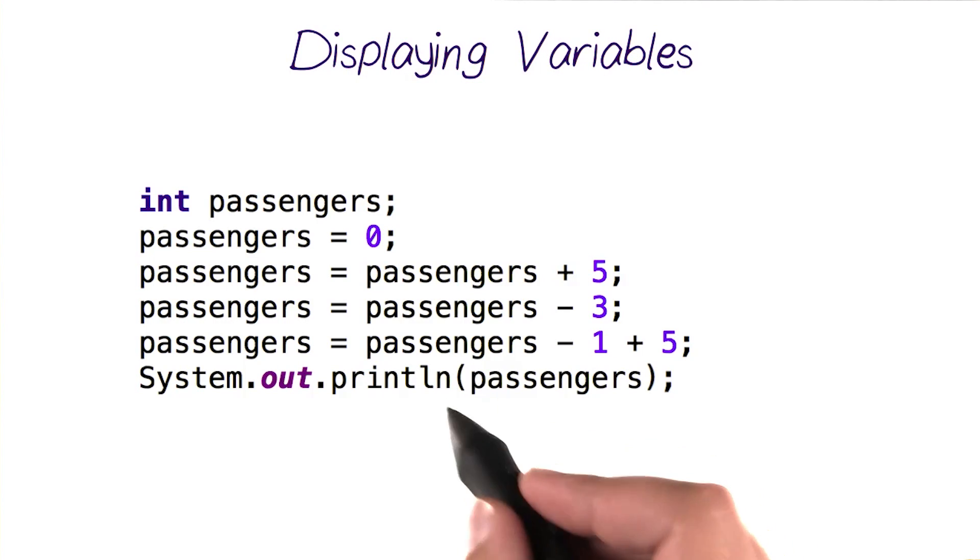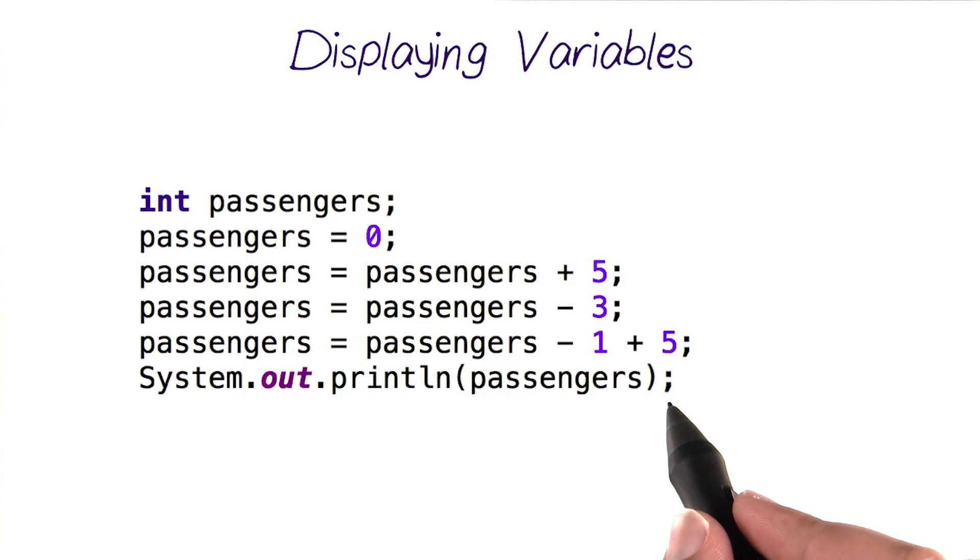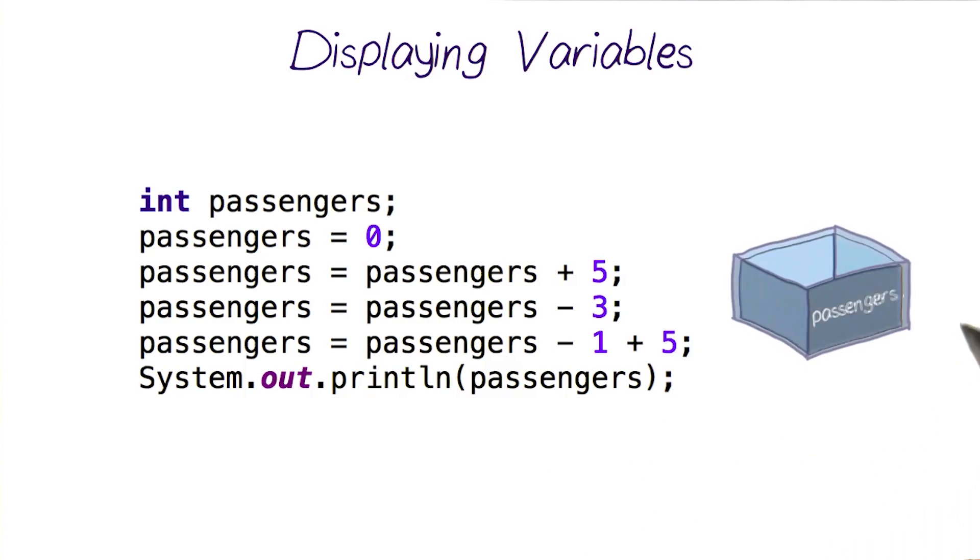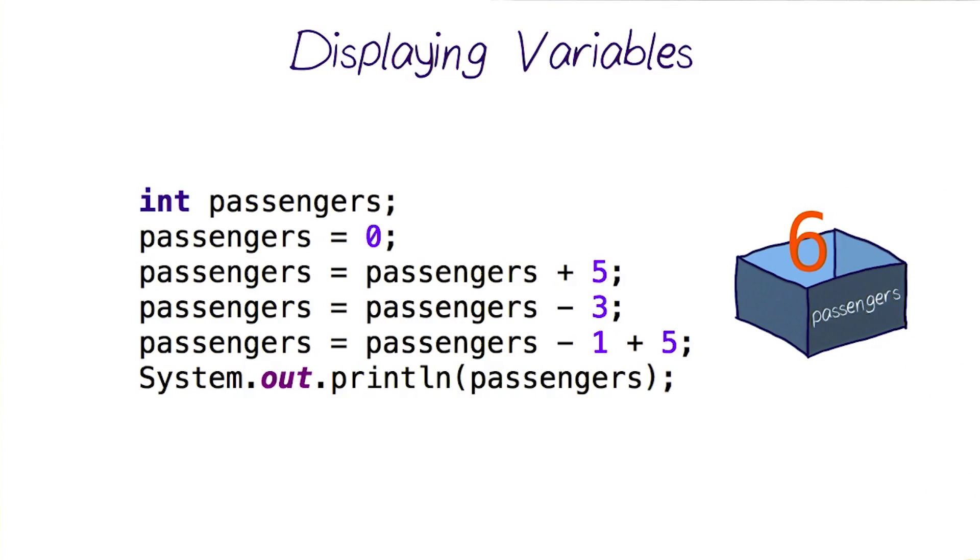So, when we type in something inside those parentheses here, without the quotation marks, Java automatically assumes that this is a variable, and starts looking for the value stored inside that variable, and displays it because this is a print line statement.